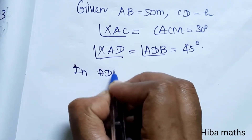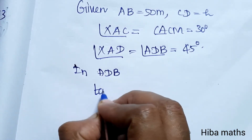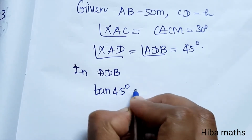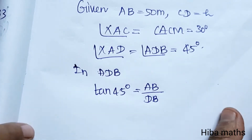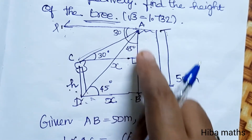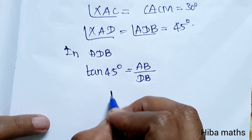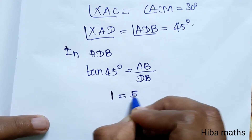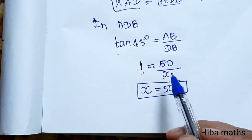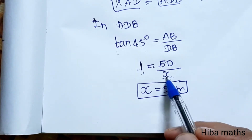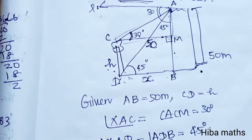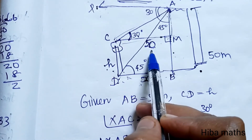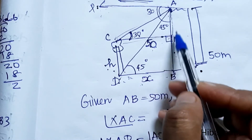First, in triangle ADB, tan 45 degrees is equal to AB divided by DB. Tan 45 value is 1, AB value is 50, DB value is X. Cross multiplying, X is equal to 50 meters. So X value is 50 meters and CM value is 50.